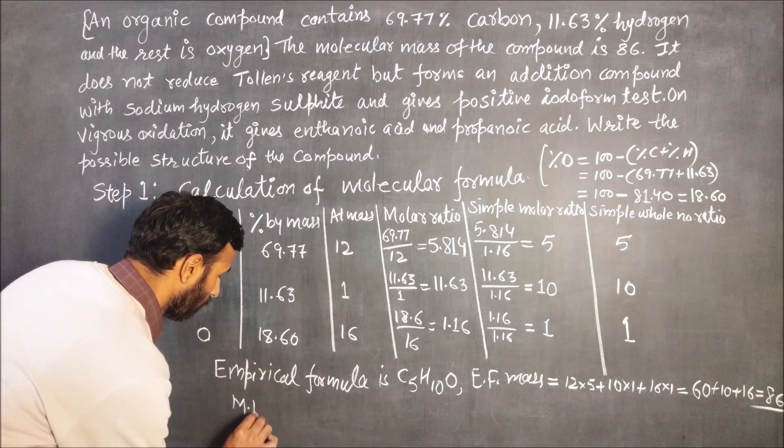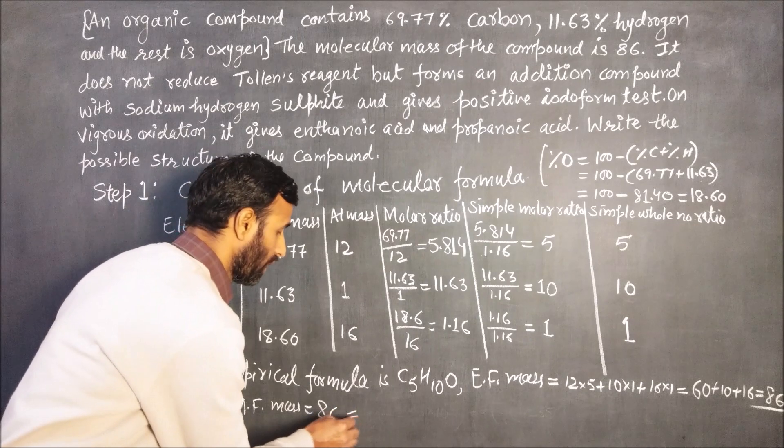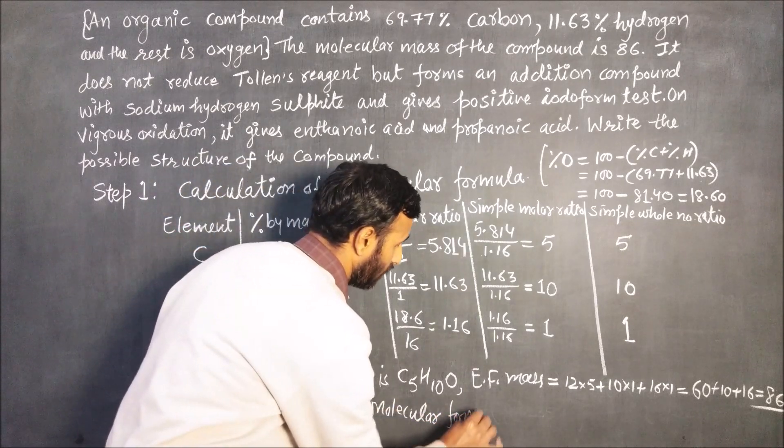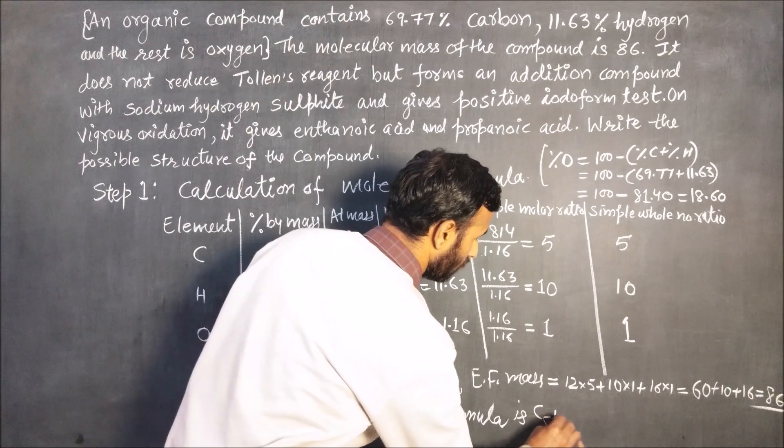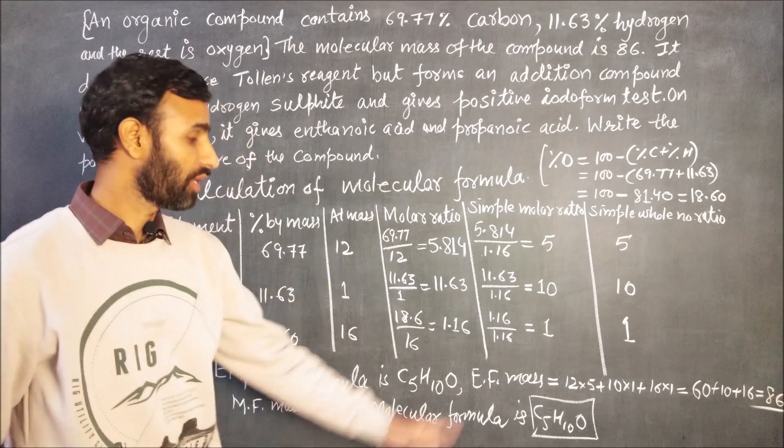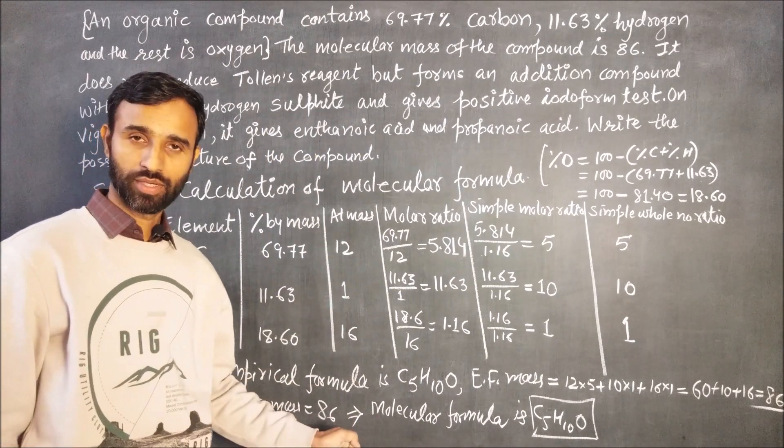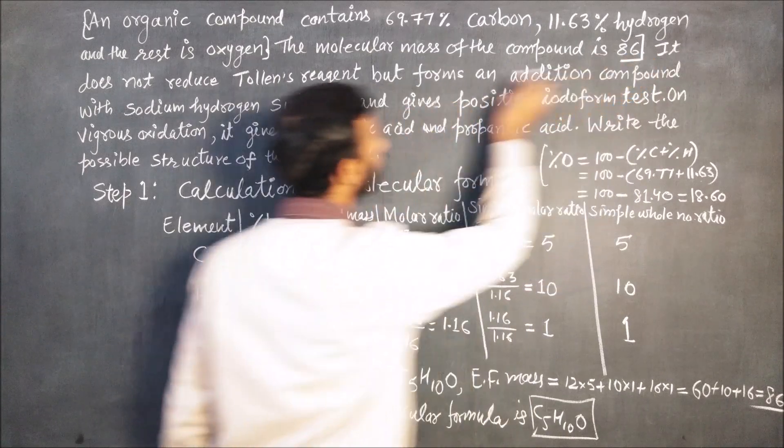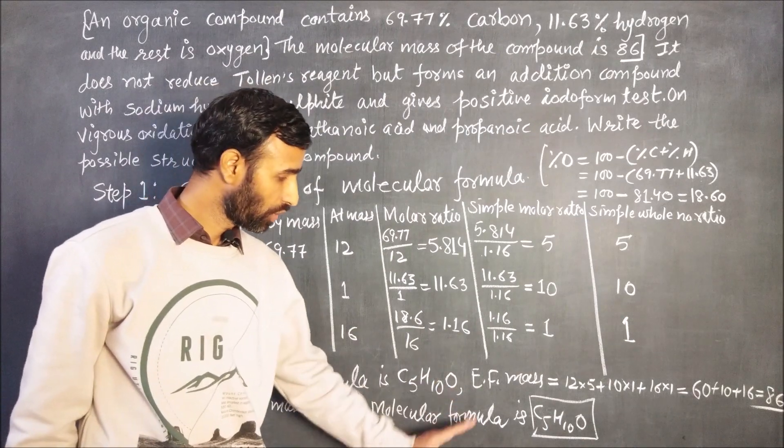Molecular mass is given 86. Molecular formula mass is equal to 86. That implies molecular formula is same as that of empirical formula. So molecular formula is also C5H10O because empirical formula mass is equal to molecular formula mass.